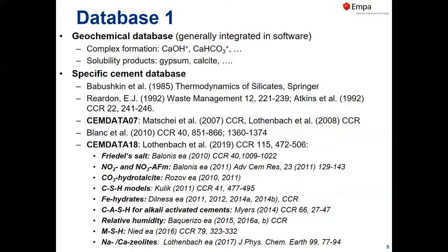This is an overview of the history of the databases. The first cement database was published in 1985 by Babushkin et al., a Russian scientist who published a Russian version about 10–15 years earlier — before computers, so he did all calculations by hand. Then there was a very good database by Weirden, and in 2007 we started making the CEMDATA database with a major update two years ago. There's also a famous cement database by Blanc et al., which uses a different general database — the VESTA database — so they are not fully compatible, but it's also a very good reference.